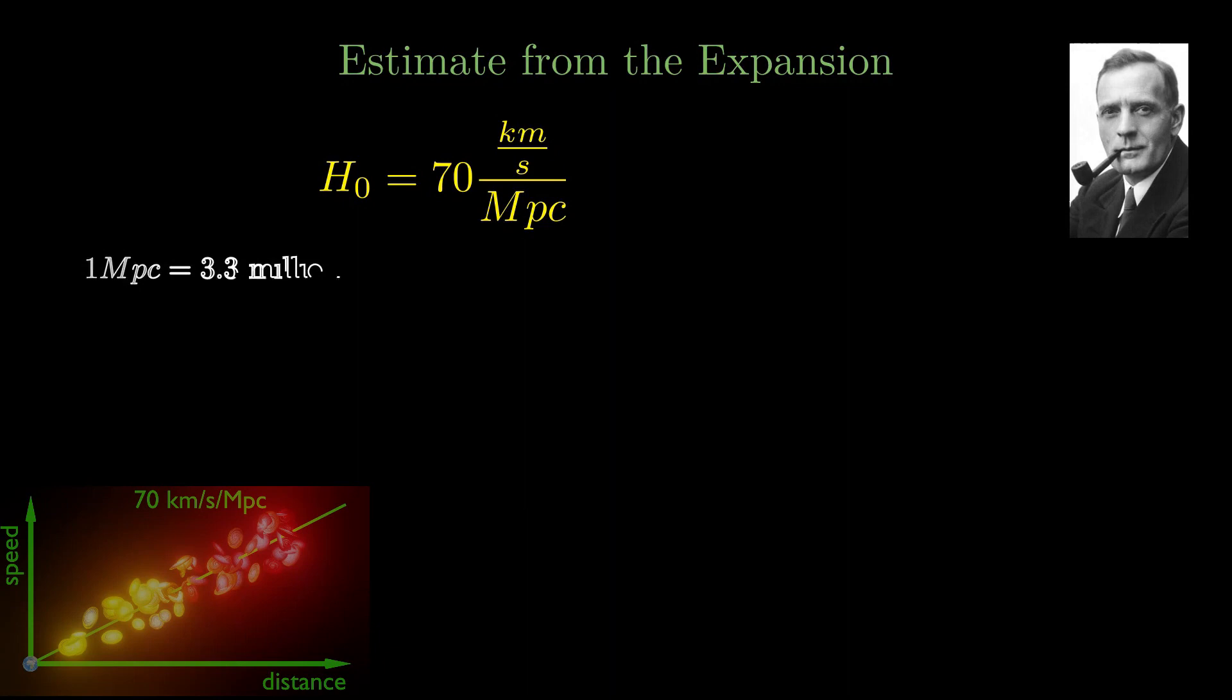One megaparsec is a convenient unit to measure astronomical distances. It is the same as 3.3 million light years. One light year is the distance that light can travel within one year, which is about 9.5 trillion kilometers. Finally, one megaparsec corresponds to 31 million trillion kilometers.